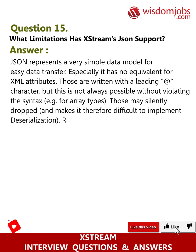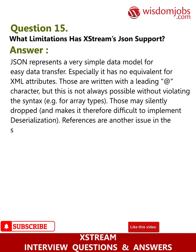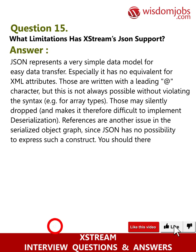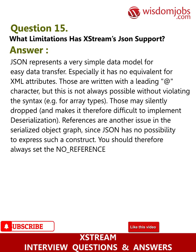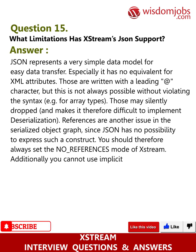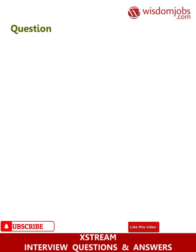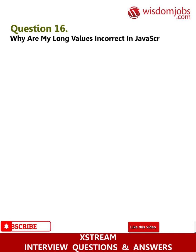References are another issue in the serialized object graph, since JSON has no possibility to express such a construct. You should therefore always set the NO_REFERENCES mode of XStream. Additionally, you cannot use implicit collections since the properties in a JSON object must have unique names.